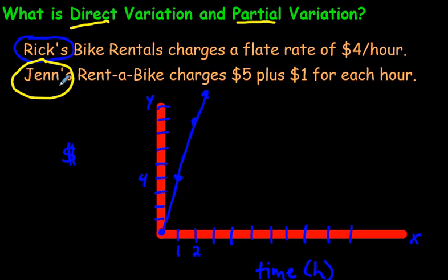Now let's do Jen's bike rentals in yellow. So Jen's bike rentals, they charge $5 at the beginning, right up front. And then you have to pay $1 for each hour that you're borrowing the bike. So chances are, if you're just renting the bike for an hour, you probably wouldn't want to rent from Jen. But if you were renting for a longer period of time, well, let's see what happens.